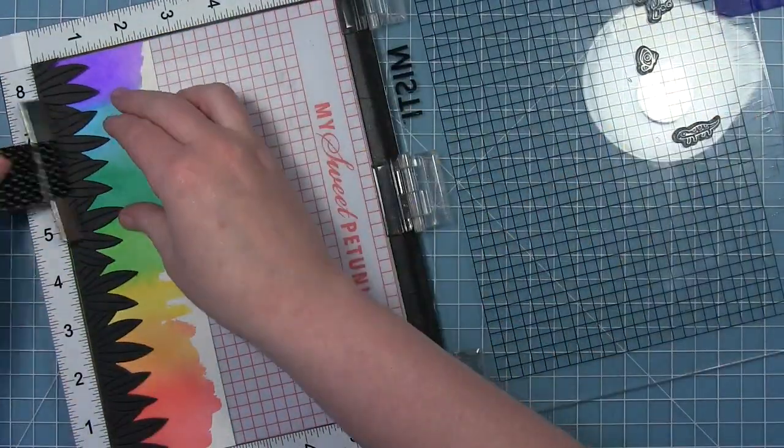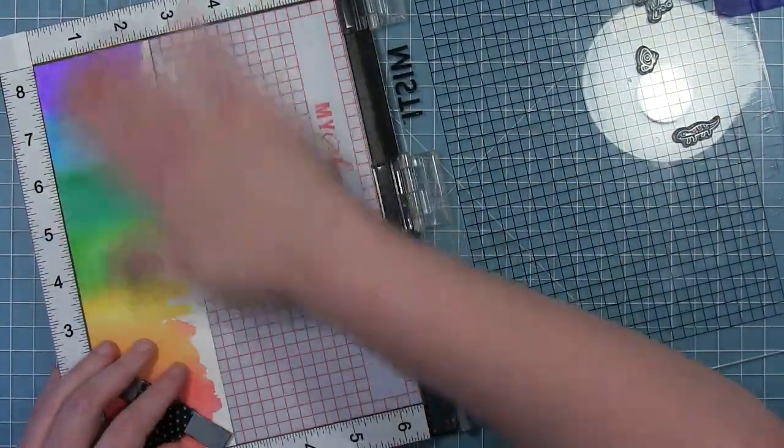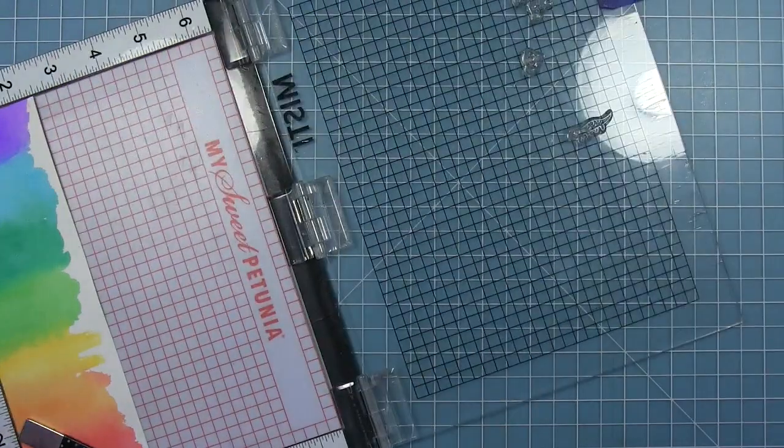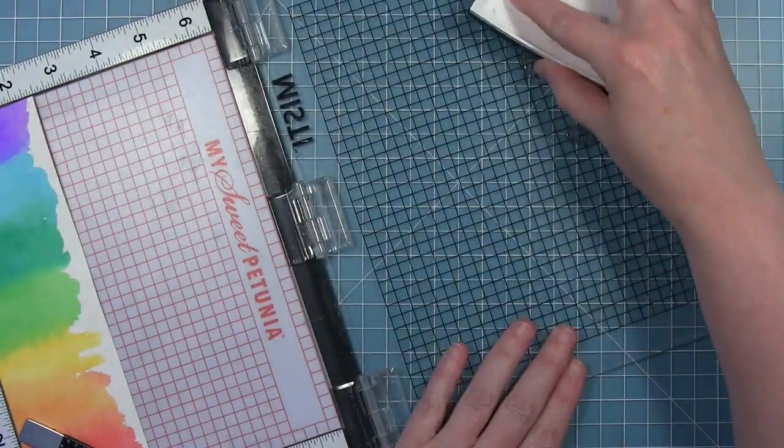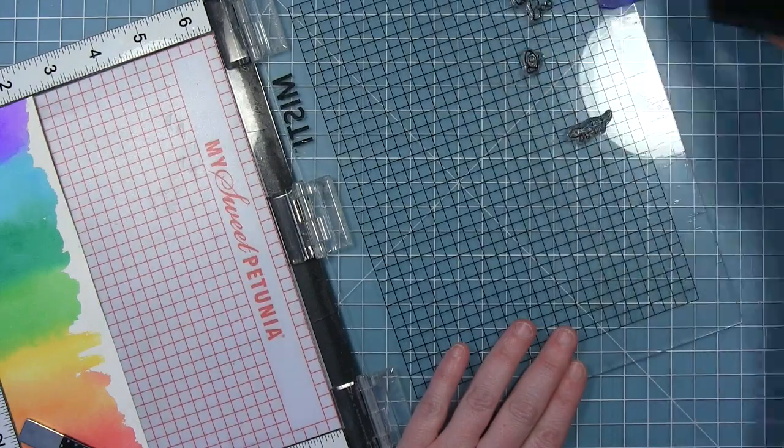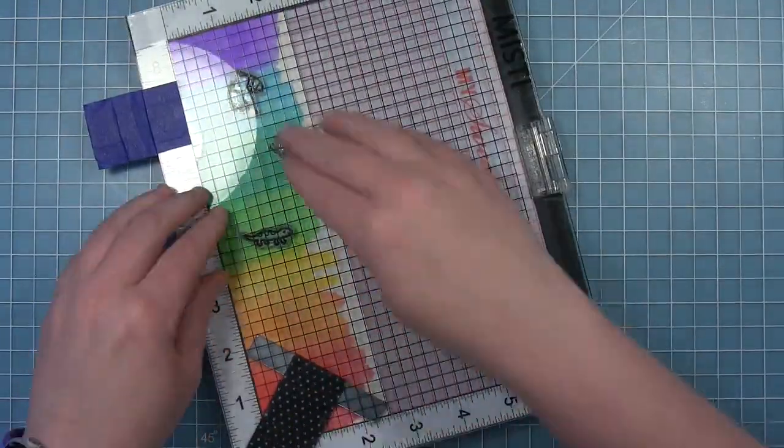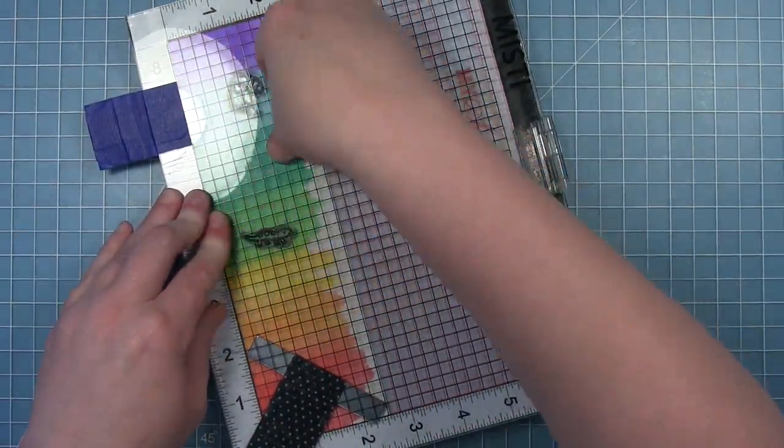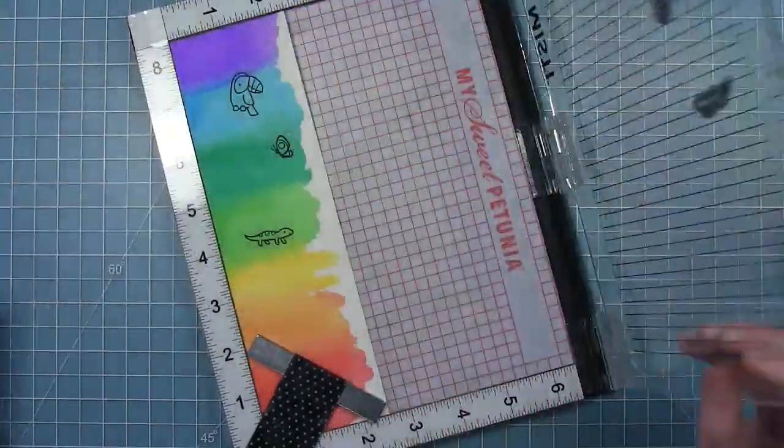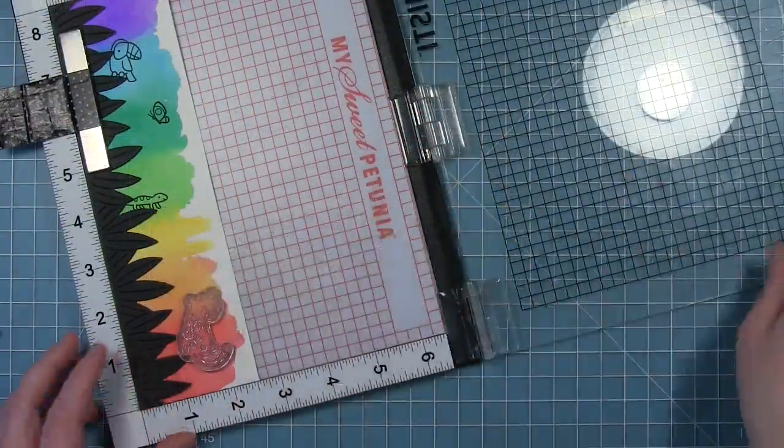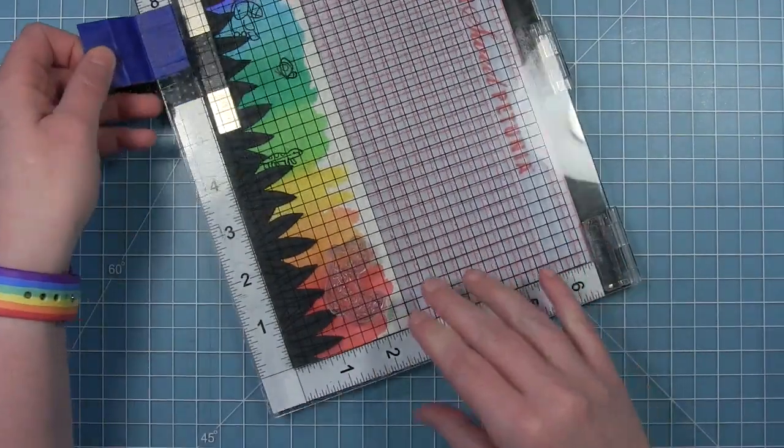I'm just going to pick them up with my MISTI door, pull those leaves out, and then I am using Versafine Onyx Black Ink. This is a really crisp black ink, and this watercolor paper has a little bit of texture, and this is going to stamp beautifully on this paper. So you can see there how they fit sitting in those leaves.